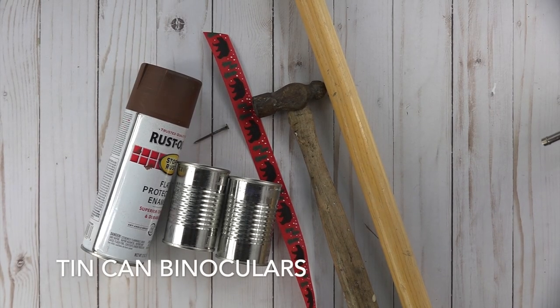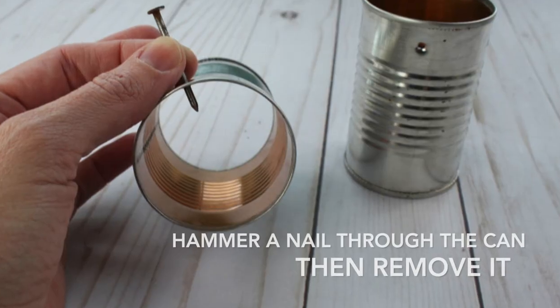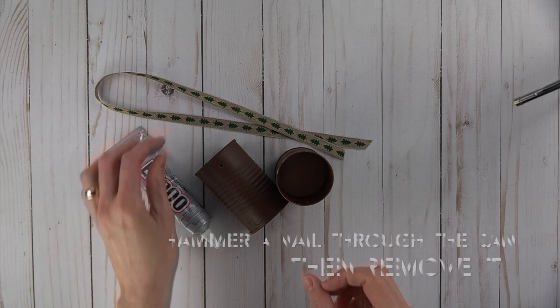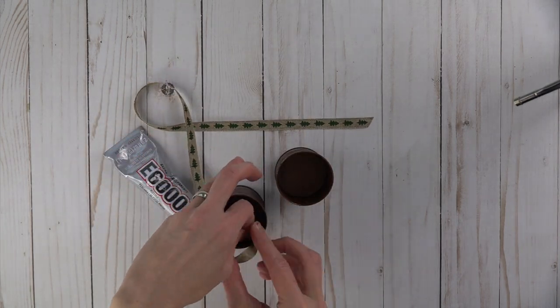On to the next, the tin can binoculars. You're really going to need a broomstick, because otherwise your can might get squashed when you hammer a hole through it. So you're going to have to hammer a hole through it to lace the ribbon and tie it in.